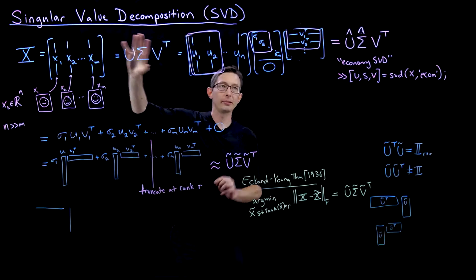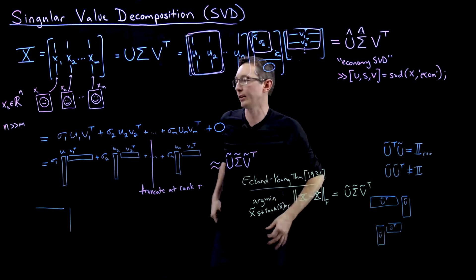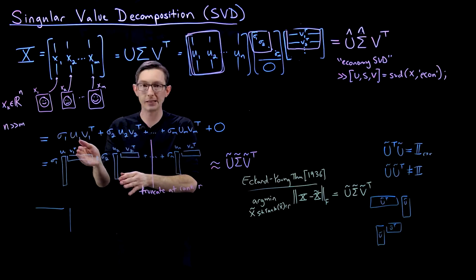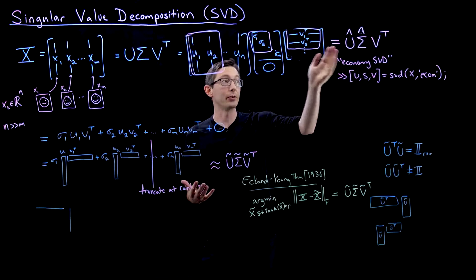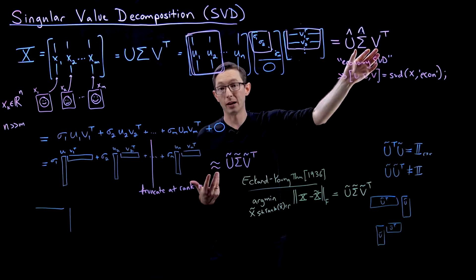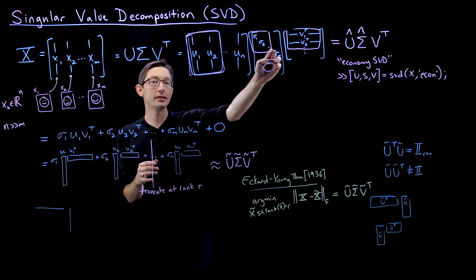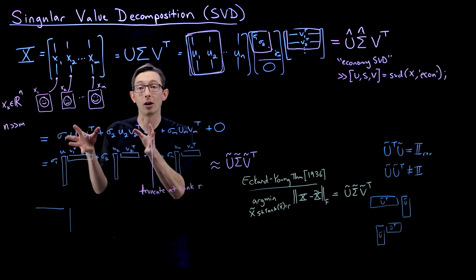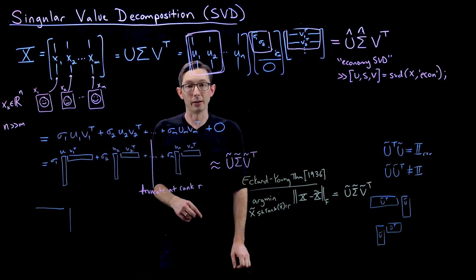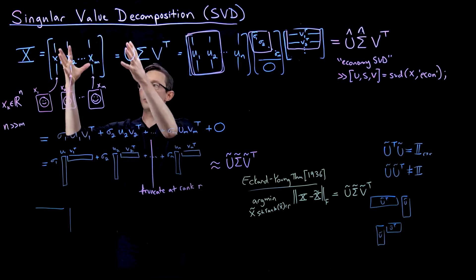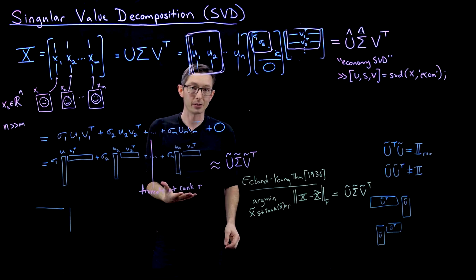To recap: you can take the singular value decomposition U·sigma·Vᵀ and rearrange it into the sum of rank-one matrices sigma1·U1·V1ᵀ + sigma2·U2·V2ᵀ + ... In general, use the economy SVD and keep the first M columns of U and first M×M subblock of sigma for tall skinny data. If you have small singular values, truncate to get a rank-R approximation — and by the Eckart-Young theorem, this is provably the best rank-R approximation to X.